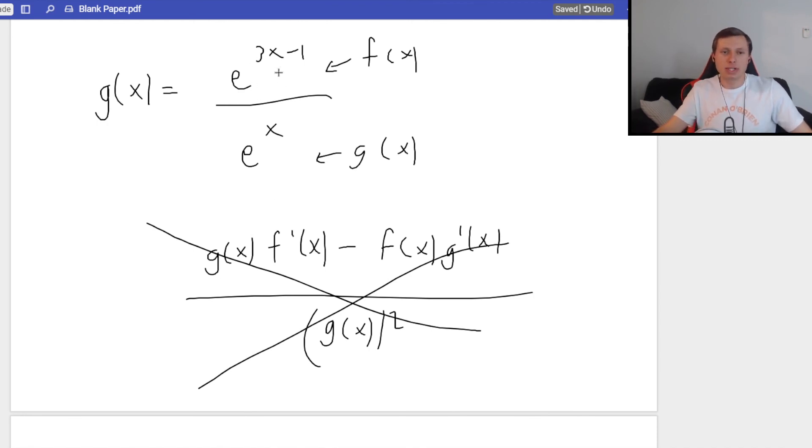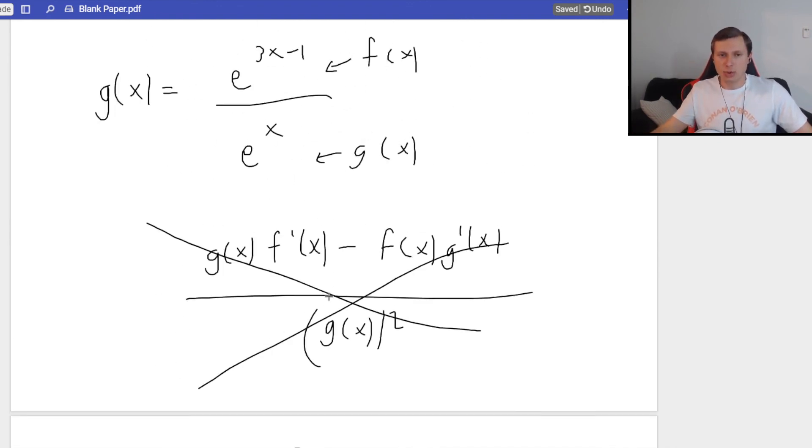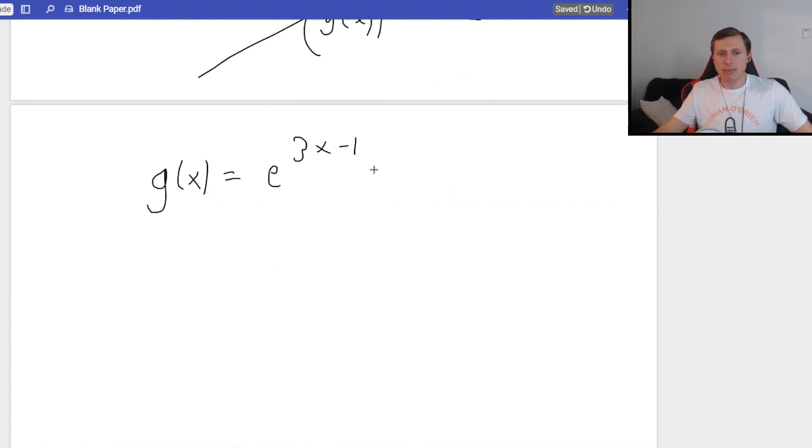Notice, I have e to the 3x minus 1 divided by e to the x. Those numbers have the same base. Which means I can rewrite this original function, before I take the derivative, as e to the 3x minus 1 minus my denominator, so minus x. This simplifies to e to the 2x minus 1. Now, if I take the derivative of this, notice this is so much easier. So, always look out for that. Whenever it's the same base, see if you can simplify. It's going to make your life a lot easier.